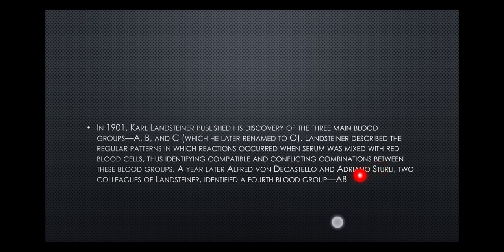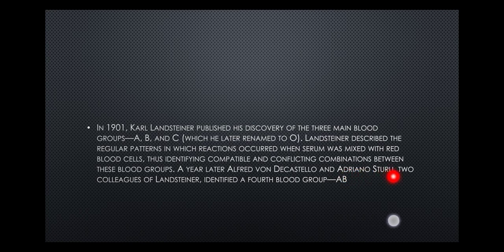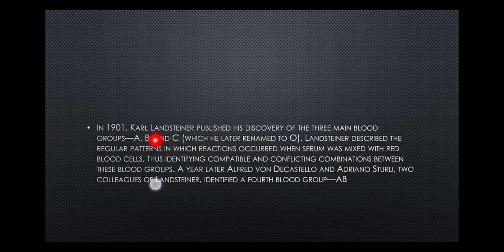A year later, Alfred von Decastello and Adriano Sturli — two colleagues of Landsteiner — identified a fourth blood group: AB. So the four blood groups are A, B, AB, and O.